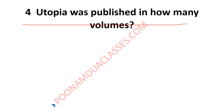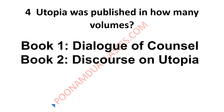Utopia was published in how many volumes? There is no specific information about volumes per se. The examiners were likely talking about the books — there are two books: Book 1, Dialogue of Counsel, and Book 2, Discourse on Utopia.